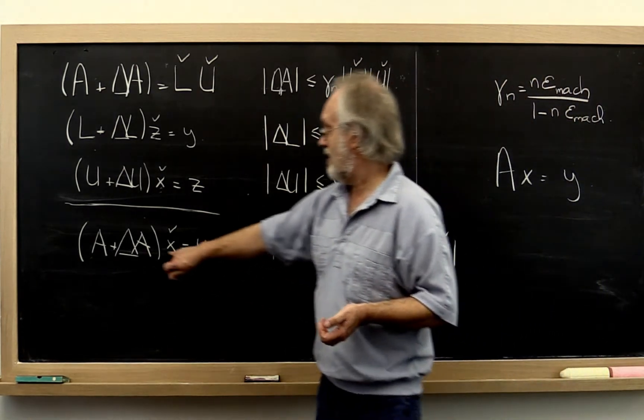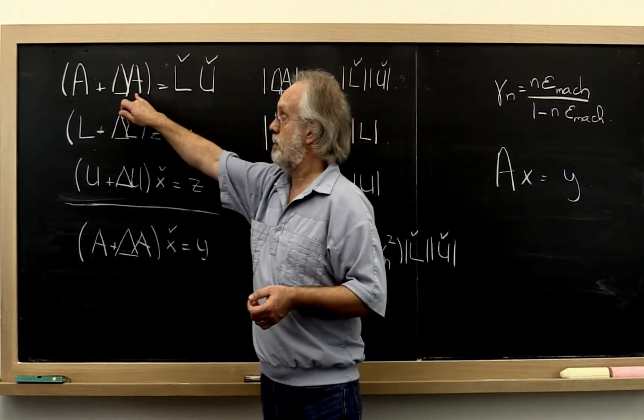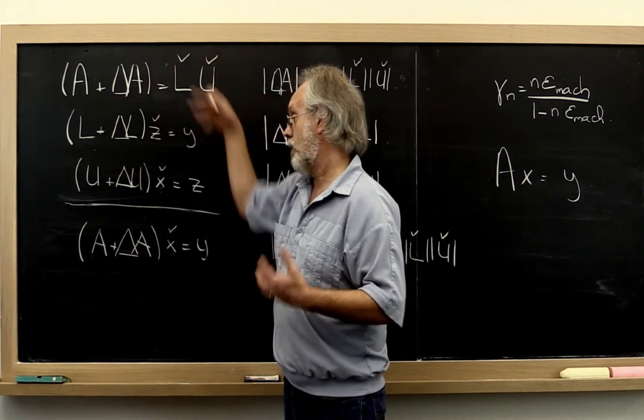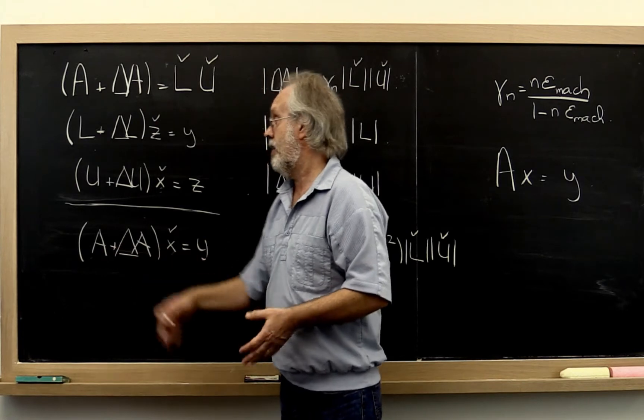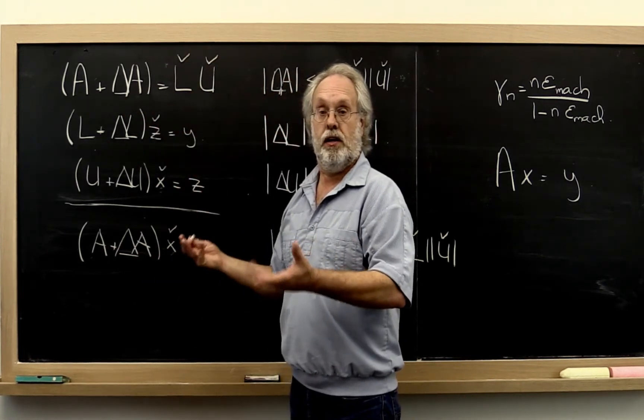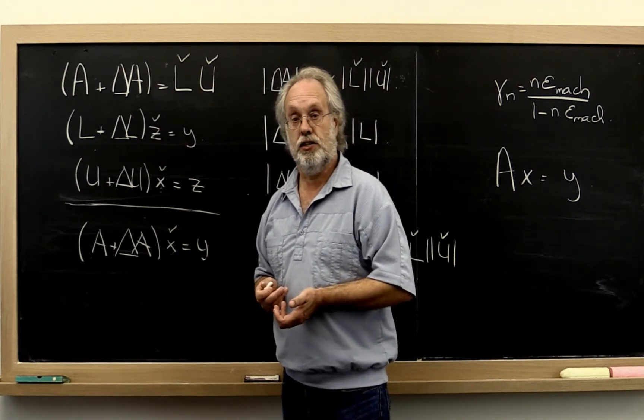Now what that means is that this delta A is not the same as that delta A. This is the delta A that accumulates, throws back the error onto A for all three steps, while this one only deals with the error that results from doing the LU factorization.